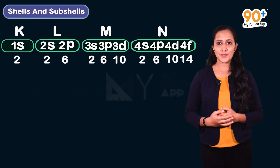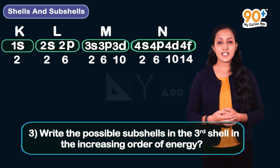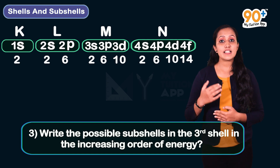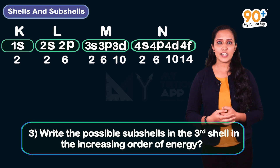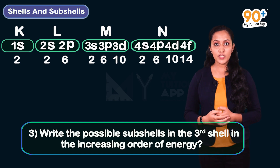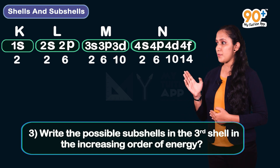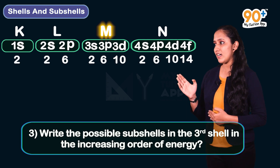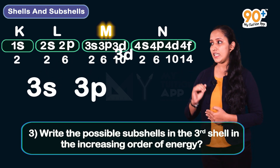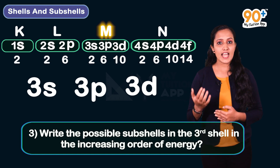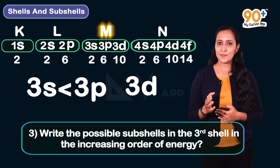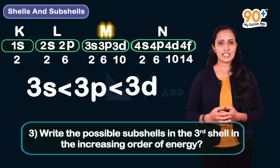Third question: Write the possible subshells in the third shell in increasing order of energy. We know the third shell is the M shell, with subshells 3S, 3P, and 3D. In order of energy: 3S < 3P < 3D.